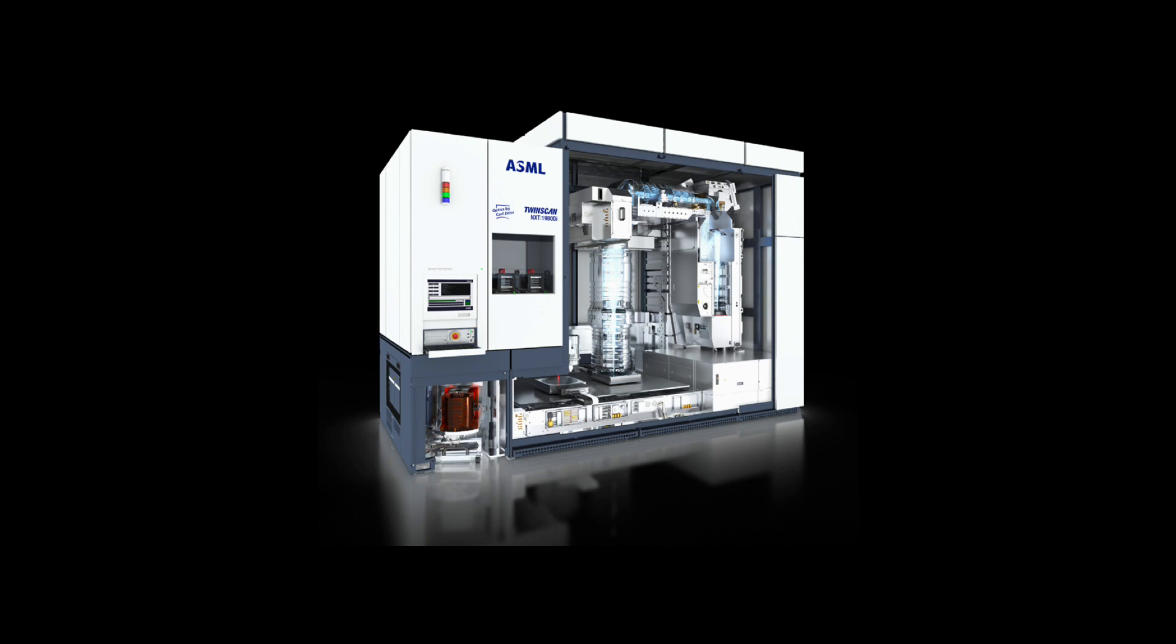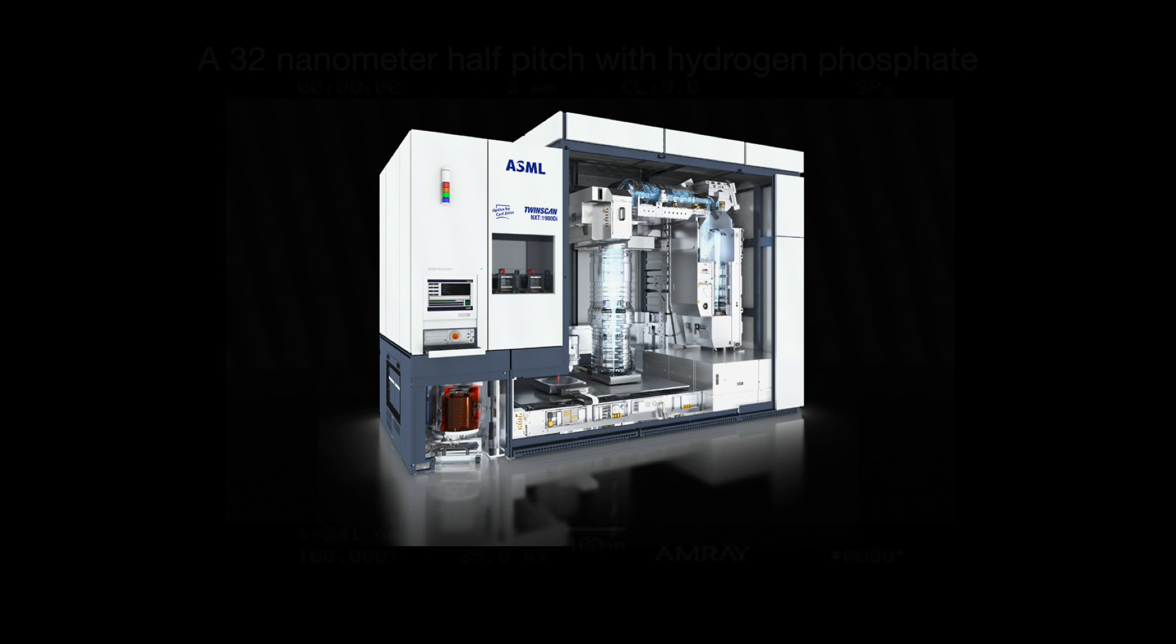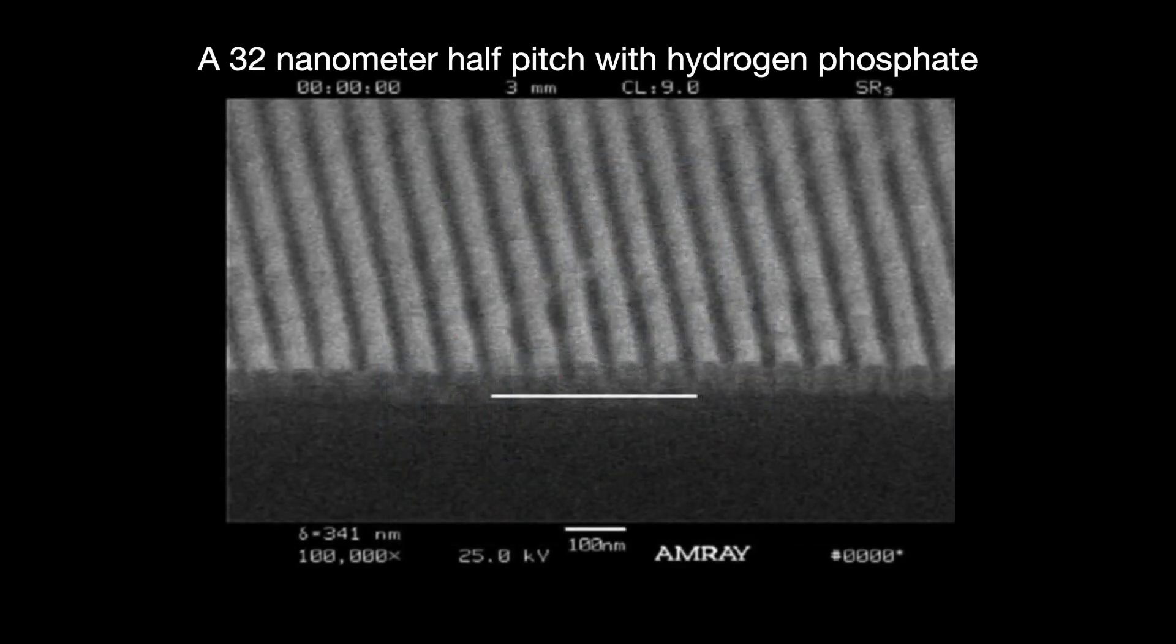These later generation systems raise the NA to as high as 1.92 so that foundries can pattern features down to 40 nanometers. But they also require new immersion fluids like hydrogen phosphate or aluminum chloride as well as brand new optics systems.